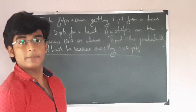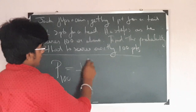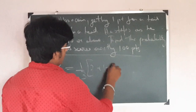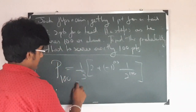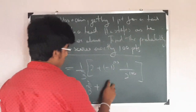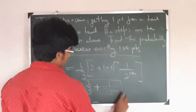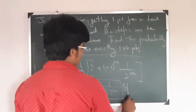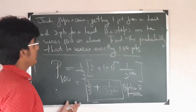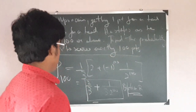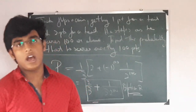As we know the formula, we can directly apply it: P(100) = one third times [2 + (-1)^100 times 1/2^100], which equals 2/3 plus 1 upon (3 times 2^100). This is the required answer — this was option B of the question. So this was all about recursive probability. This is a very interesting topic and I hope you liked the video.